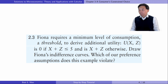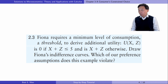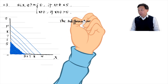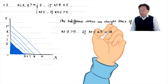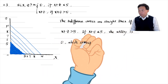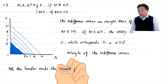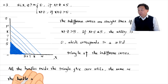Let's do exercise 2.3. Fiona requires a minimum level of consumption — a threshold — to derive additional utility. U(x, z) is 0 if x plus z is less than or equal to 5, and is x plus z otherwise. Draw Fiona's indifference curves. The indifference curves are straight lines if the sum of x and z is greater than 5. Otherwise, the utility is 0, which corresponds to a solid triangle of indifference curves. All the bundles inside the triangle give 0 utiles, the same as the bundle at the origin.